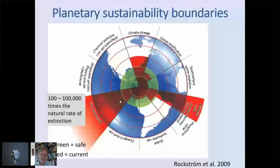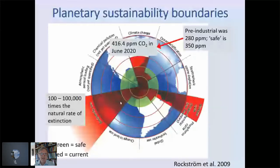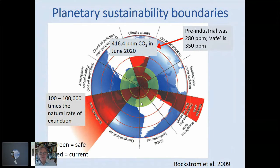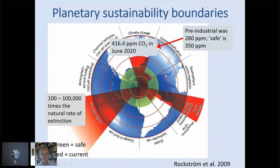Climate change is also way over the planetary boundary. This year we've been recorded at 416 parts per million CO₂; pre-industrial levels were 280 ppm, and what is regarded as safe is 350 ppm. We need to sequester some of the carbon in the atmosphere to re-enter the safe zone. Another boundary far exceeded is the use of nitrogen — the Haber-Bosch process of creating nitrogen for industry and agriculture has overwhelmed natural sources of nitrogen.